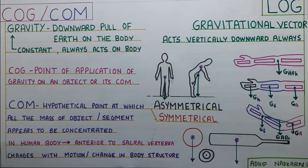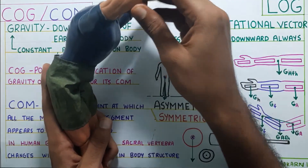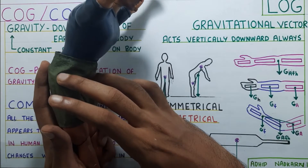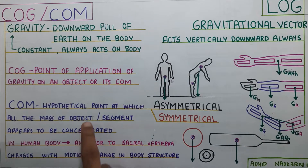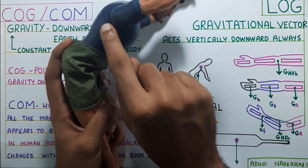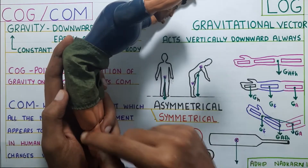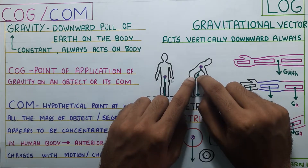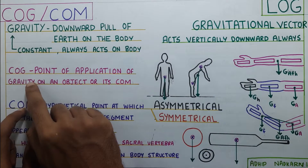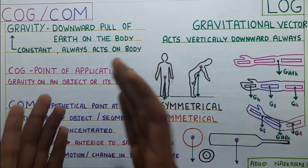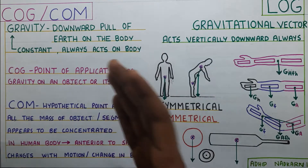Center of mass can also change with motion. If you see a human being standing and then flexing, there are two points — the center of mass of his upper trunk and the center of mass of his lower body. We have divided the body into two segments. The upper part has a center of mass of its own and the lower part has a center of mass of its own. When you connect both of these, you get a point outside the body. So the center of gravity of this human being is outside the body. When gravity is acting on the center of mass, it can be called the center of gravity — so center of mass and center of gravity are essentially the same thing.